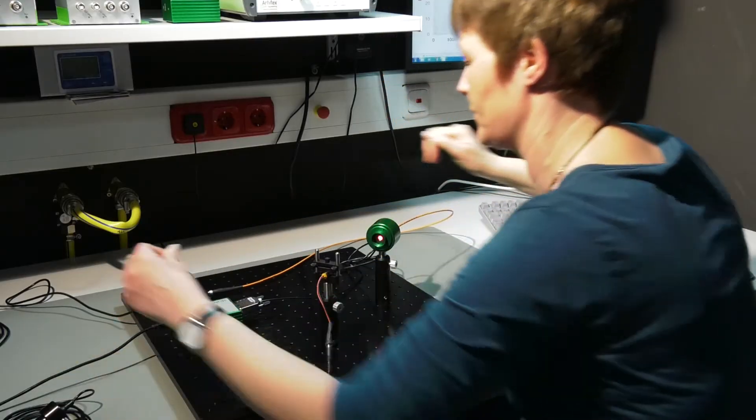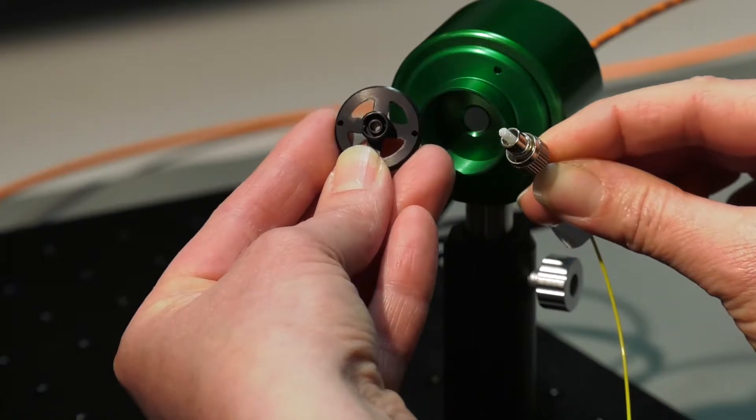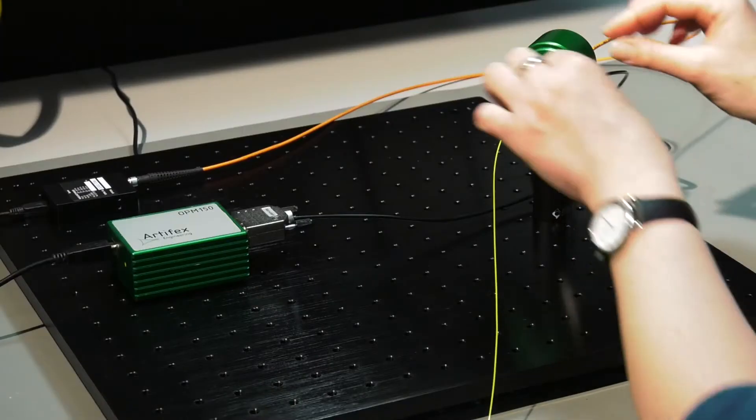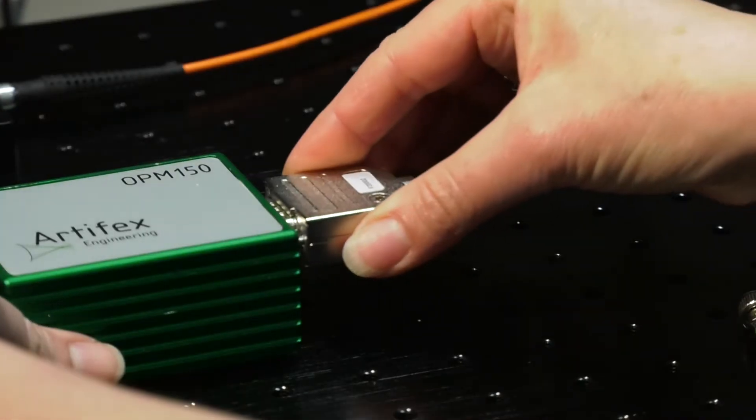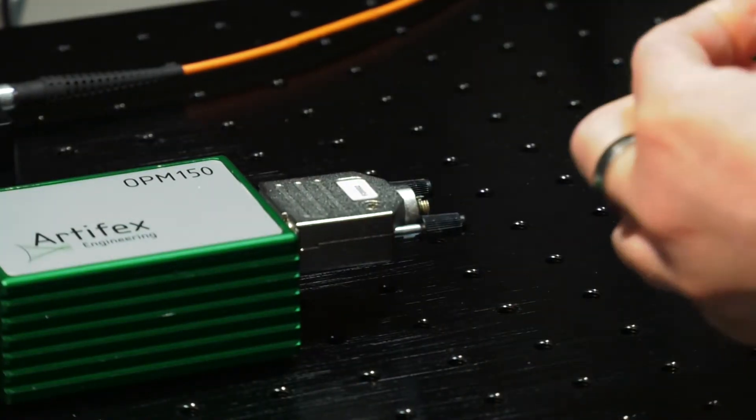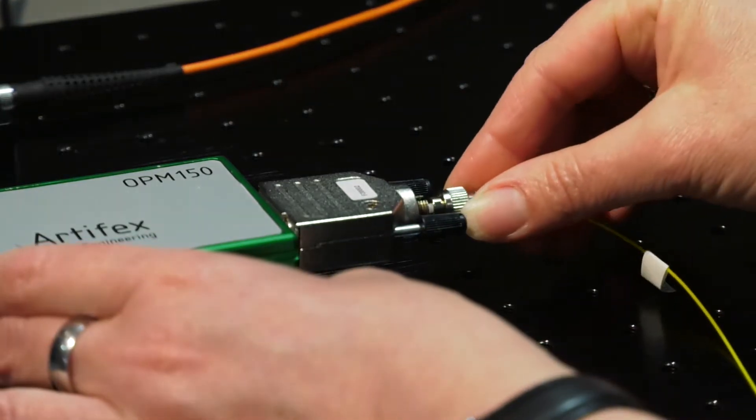Measurement of fiber coupled sources may be performed by attaching an adapter to the detector head or by using a dedicated fiber detector head. The fiber detector heads allow for a very compact setup.